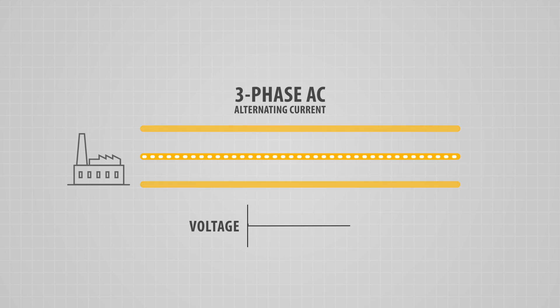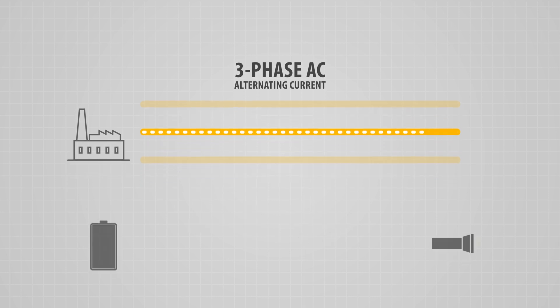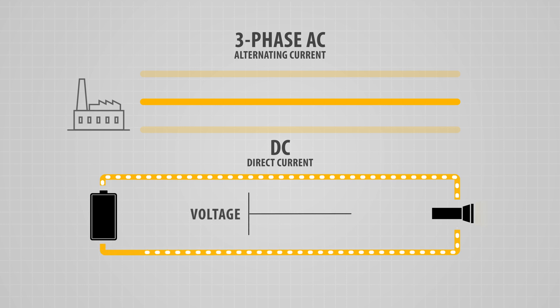AC, or alternating current, is the oscillating, or back-and-forth, movement of electrons on a wire. This is distinct from DC, or direct current, in which electrons flow in a single direction.